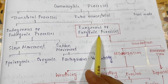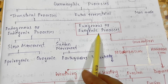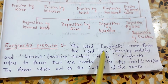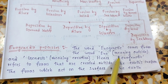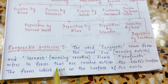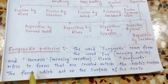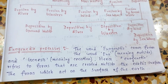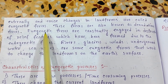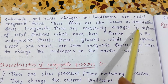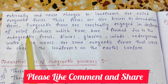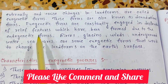Now we learn about exogenous or exogenetic process, which is in our Class 10 syllabus. The word exogenetic comes from 'exo' meaning outside and 'genesis' meaning creation. Hence, exogenetic refers to forces created outside the earth's surface. The forces which act on the surface of the earth externally and cause changes in landforms are called exogenetic forces. These forces are also known as denudational forces.